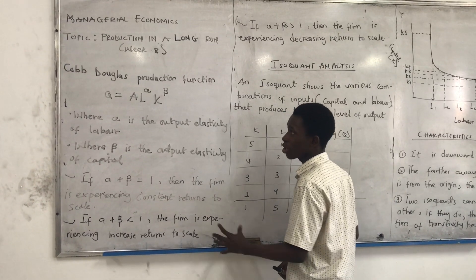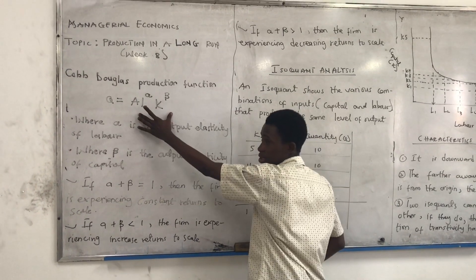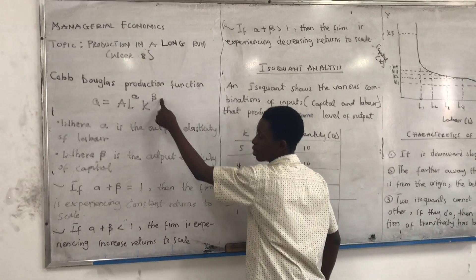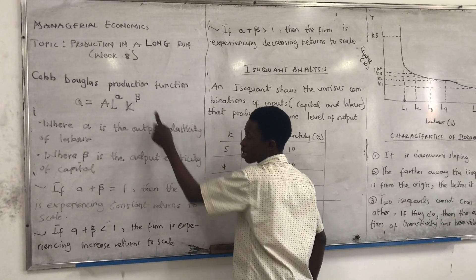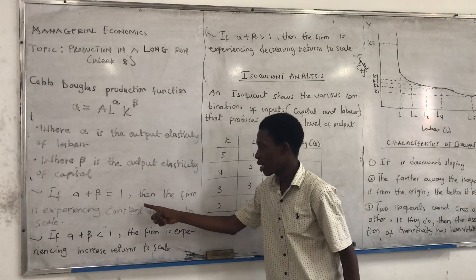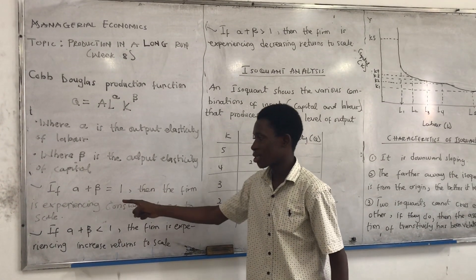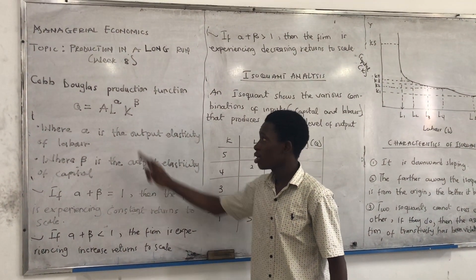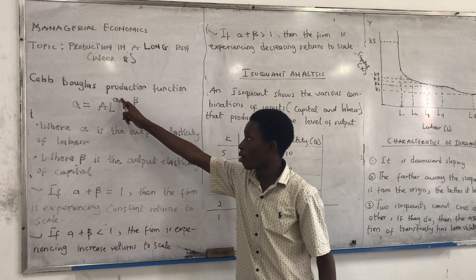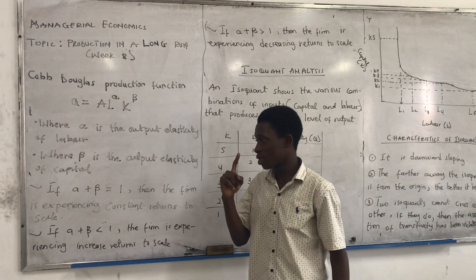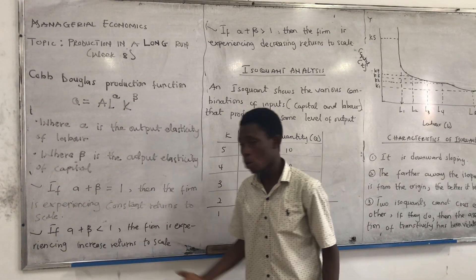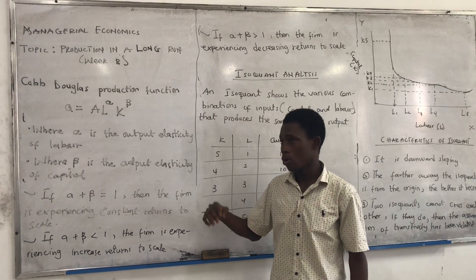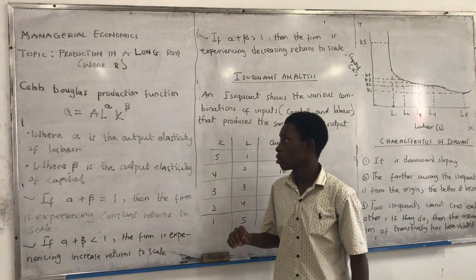With some questions you can actually interpret this function. With the interpretation: if alpha plus beta is equal to 1, then the firm is experiencing constant returns to scale.